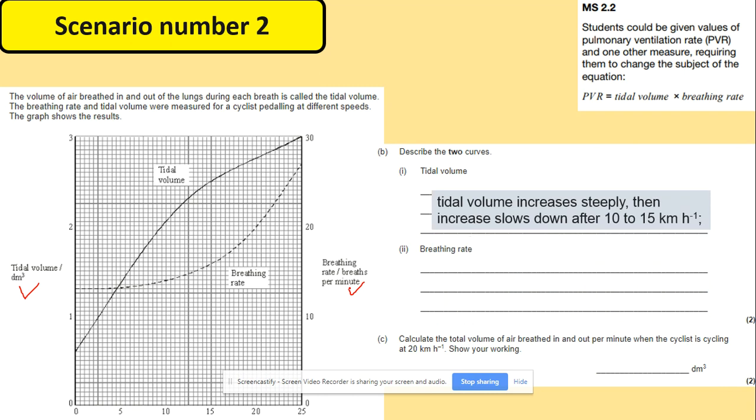For the tidal volume, it increases steeply and then the increase slows down after 10 to 15 kilometers per hour. We can see it here. Breathing rate is different. It increases slowly, which we can see here, and then steeply after those 10 to 15 kilometers per hour.